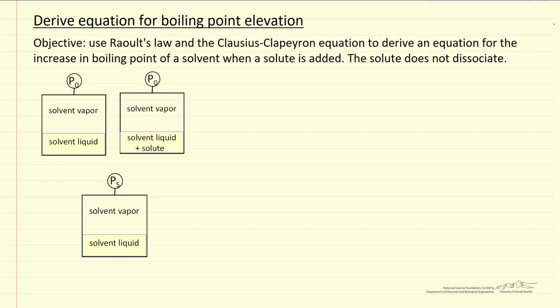Here we're going to look at using Raoult's Law and the Clausius-Clapeyron equation to develop an equation that relates the increase in boiling point of a solvent due to the addition of a solute to other variables.